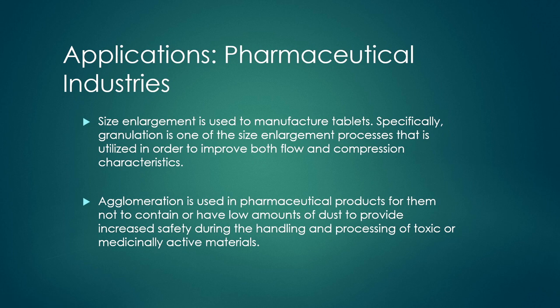In pharmaceutical industries, size enlargement is used to manufacture tablets — granulation is one size enlargement process utilized to improve both flow and compression characteristics. Agglomeration is used in pharmaceutical products to minimize dust, providing increased safety during handling and processing of toxic or medicinally active materials.